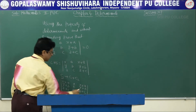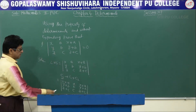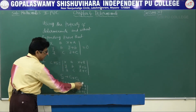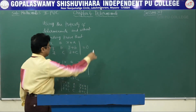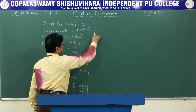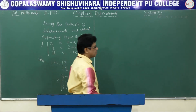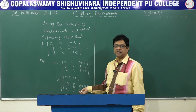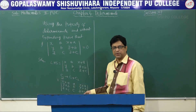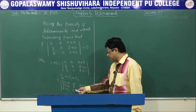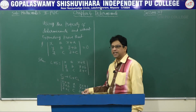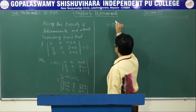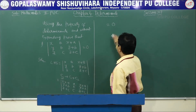If you observe here, C1 and C3 are identical. We know that if any two rows or columns are identical, then the value of the determinant becomes 0. In this problem, C1 and C3 are identical, therefore the value of the determinant becomes 0.